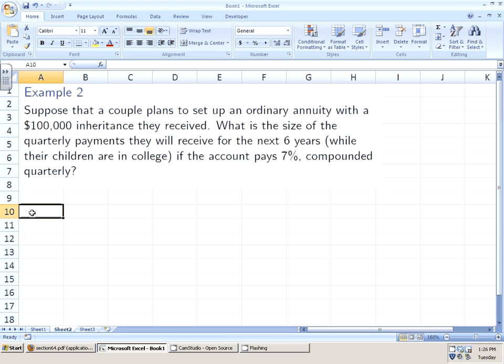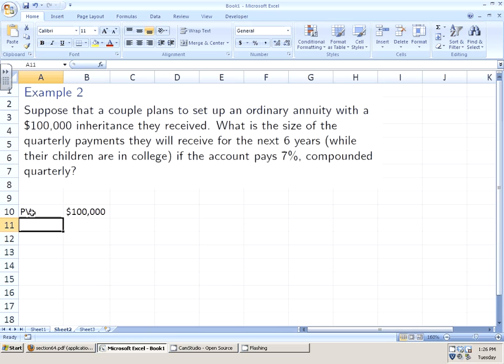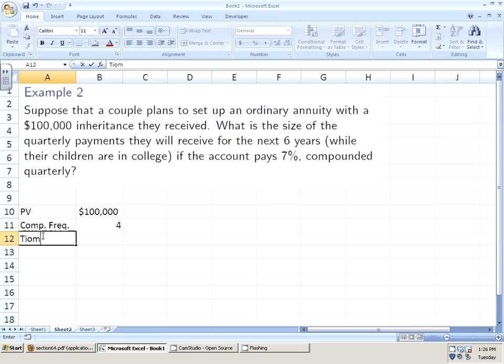So let's take another second to read through this example. Now they're going to set up this ordinary annuity. The $100,000 is a present value. It's asking what's the size of the quarterly payments. Since this is an ordinary annuity, the payments will be the same as the compounding frequency. It's quarterly, so it's four times a year. There are six years to go in this whole process and the rate is seven percent. Now as a departure, I could just do seven percent and Microsoft Excel is pretty smart.